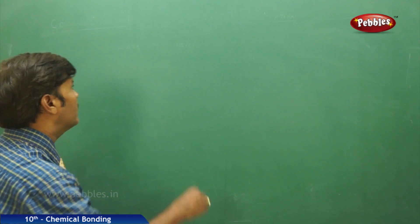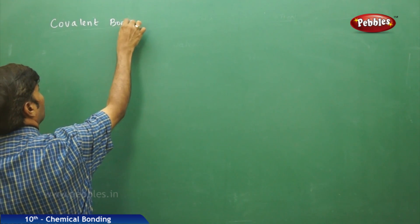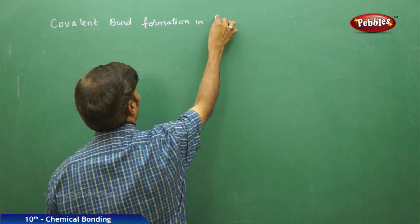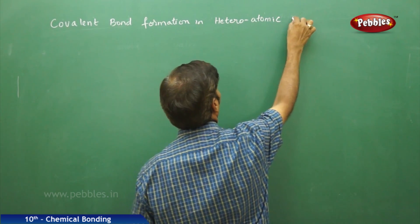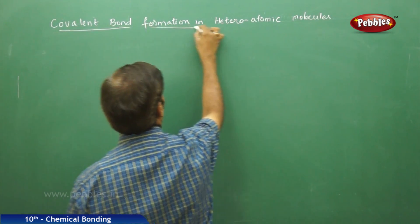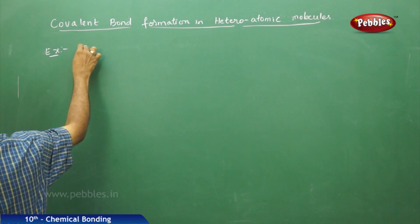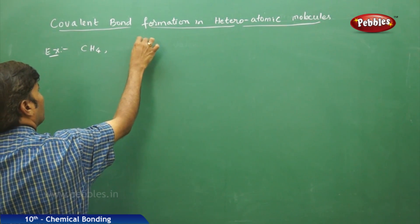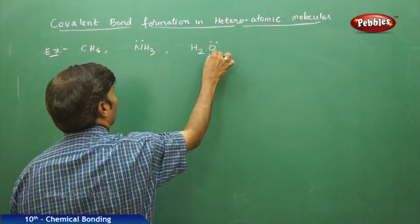The next part of the discussion on covalent bonds is covalent bond formation in heteroatomic molecules. The best examples of covalent bond formation in heteroatomic molecules are CH4 (methane), NH3 (ammonia) which contains one lone pair on the nitrogen, and H2O which contains two lone pairs on the oxygen.